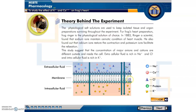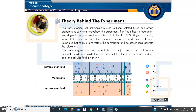What is the function of the physiological salt solution? Why do we use it? The answer is: it is used to keep isolated tissue and organ preparations surviving throughout the experiments. By using this physiological salt solution, we can keep separated or isolated tissues and organs viable throughout the experiments. Now, what is the use of ions like sodium, potassium, and calcium?